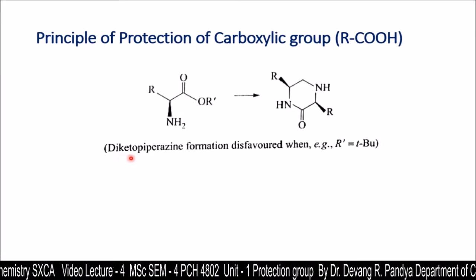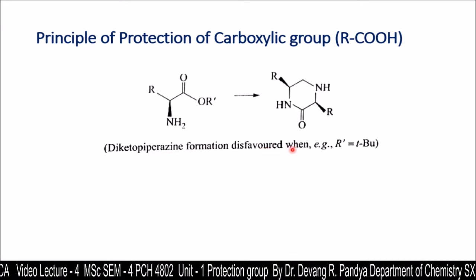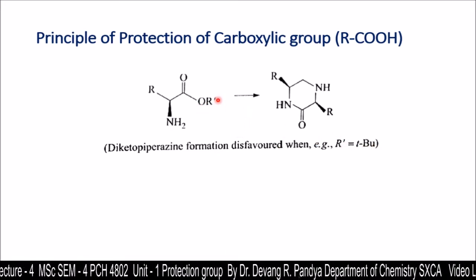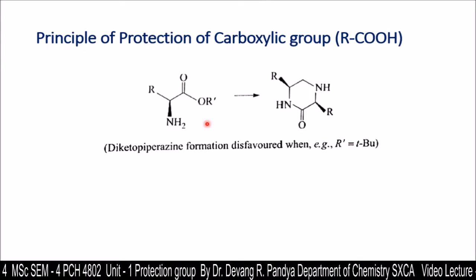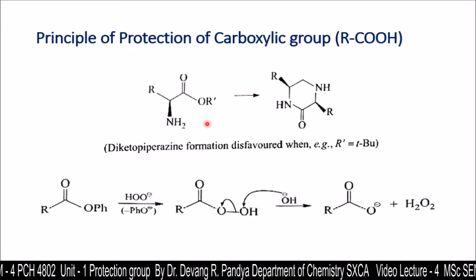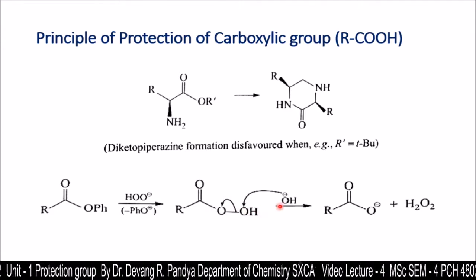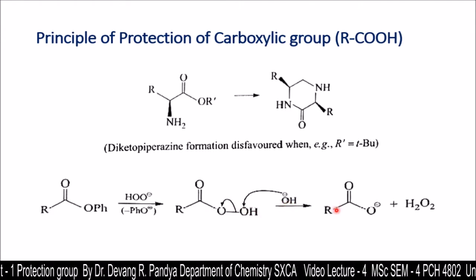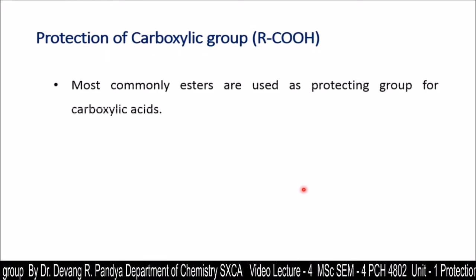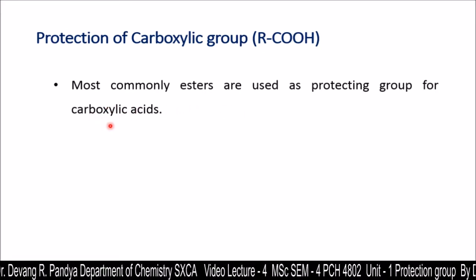Here you can see that diketopiperazine formation is disfavored when the bulkier t-butyl group is used. Here you can see the phenyl group, and treating with H₂O₂ gives the product. Most commonly, esters are used as protecting groups for carboxylic acids.